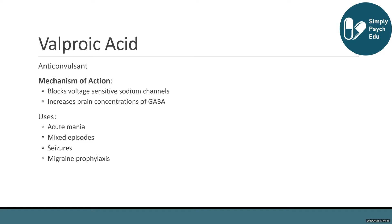GABA is the primary inhibitory neurotransmitter in the brain. Valproic acid is used to treat acute mania, mixed episodes of bipolar disorder, and is also used to treat various seizure disorders and migraine prophylaxis.